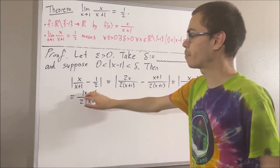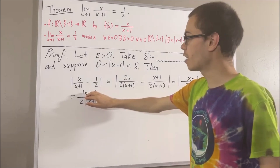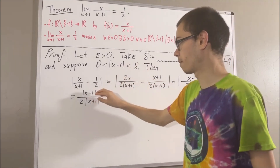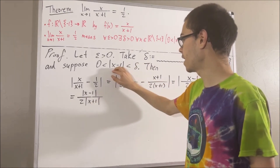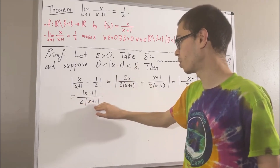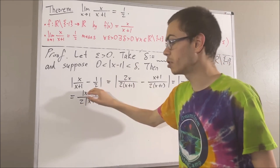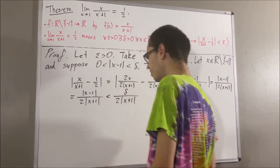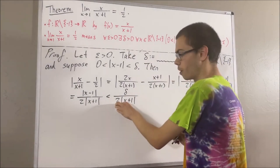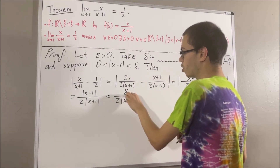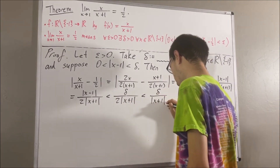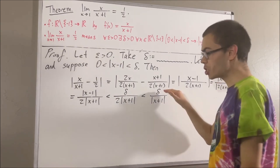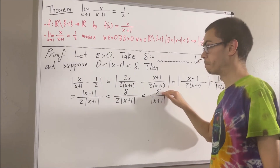Notice we have an absolute value of x minus 1, and we know that the absolute value of x minus 1 is less than delta. So let's apply this inequality. If we divide by 2 times the absolute value of x plus 1, we get that this expression is less than delta over 2 times the absolute value of x plus 1. In fact, we can bound it further: this is less than delta over the absolute value of x plus 1. But now, what should we do from here? Maybe we should start thinking about what to choose delta to be.